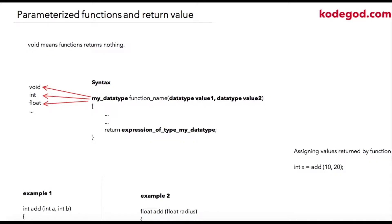Let us check again the syntax for defining a function, but this time we are adding parameters to it as well. This is your function name and this is your return type. The return type is basically any data type — your function will perform some operation and that same data type will be returned by this function. A data type can be void, int, or float. When you define integer as a return data type for your function, then your function should return an integer type of value only.